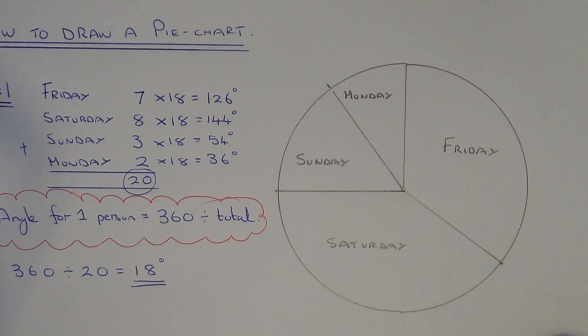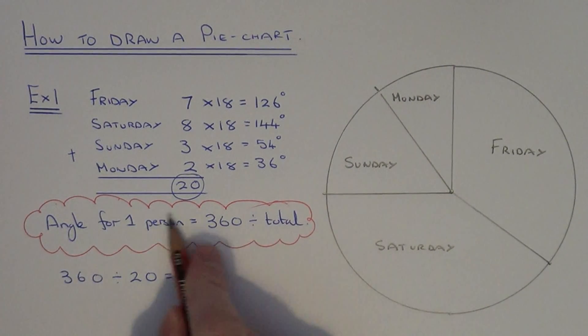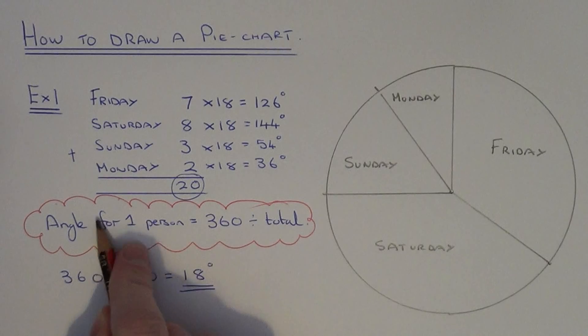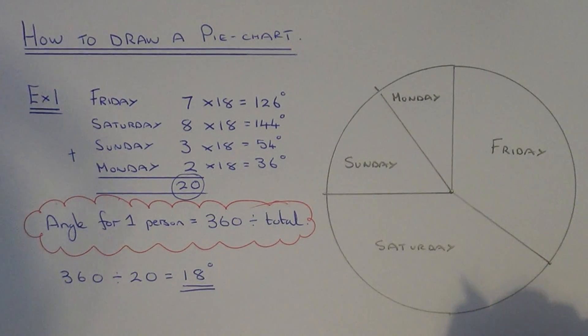So that's about it for drawing a pie chart. The main thing to remember is this formula here, and that will give you the angles for the pie chart. So just remember 360 divided by the total amount of people in the survey. Bye.